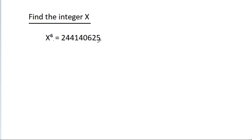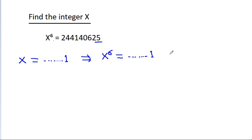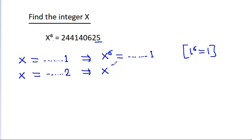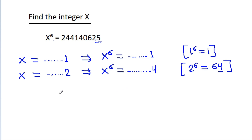The last digit of x to the power 6 is 5. If x ends with 1, then x power 6 will also end with 1, because 1 power 6 is 1. If x ends with 2, then x power 6 ends with the last digit of 2 power 6, which is 64 — so it ends with 4. And if x ends with 5, then only x power 6 will end with 5.